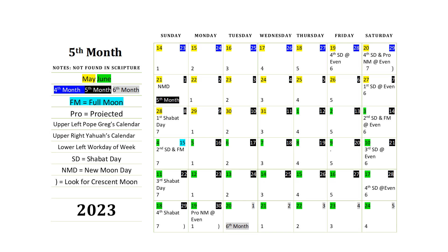This is what we have for the fifth month. Everything on the left side is self-explanatory — it explains the numbers, colors, and positions. The moon was spotted Saturday evening on the 20th, which was the 29th day for us, so that makes the 21st the first day of the fifth month — new moon's day, day one. After this we count six working days, one through six, and then on the seventh day is the day of rest, which is called the Shabbat.